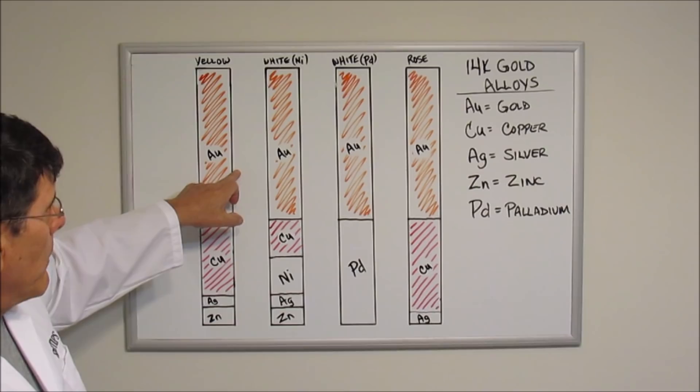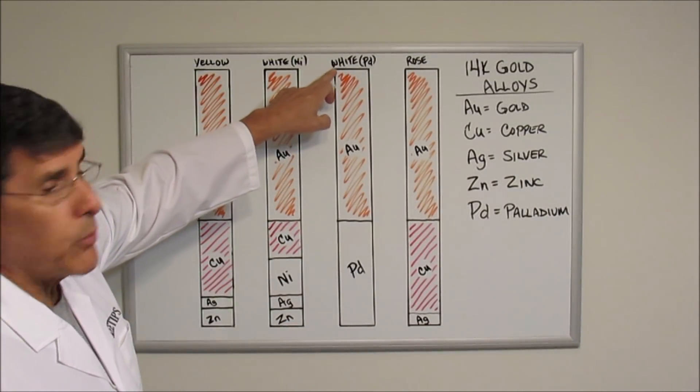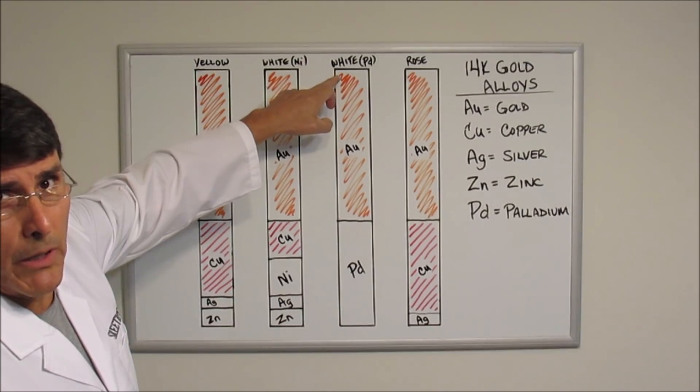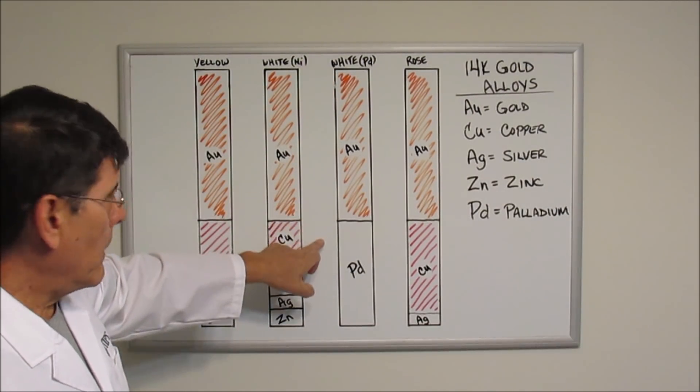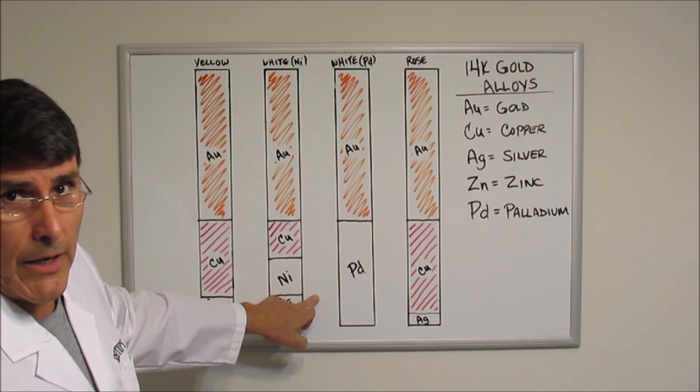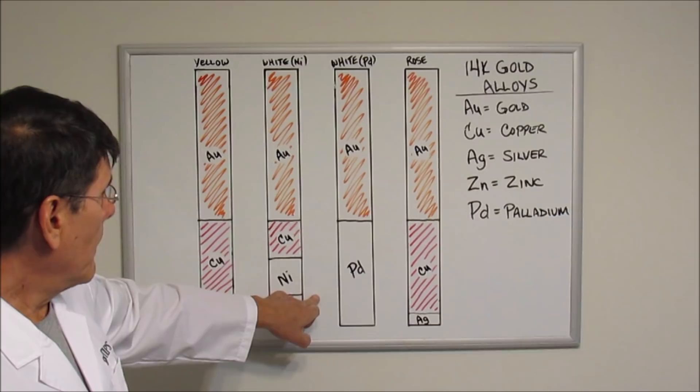This is white gold alloyed with palladium: 59 percent roughly pure gold and the rest is going to be pure palladium. That achieves a nice white gold tone.